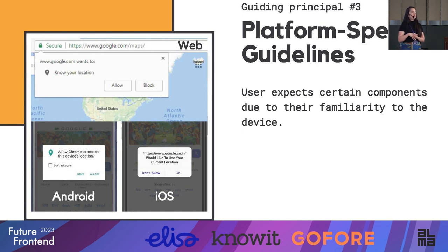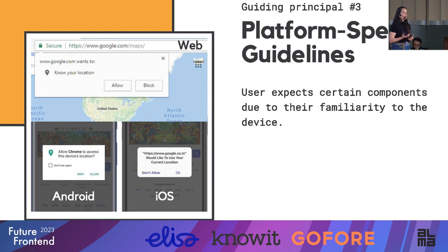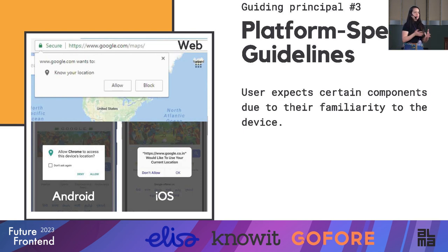Guiding principle number three: platform-specific guidelines. The user expects certain components due to their familiarity with the device. Take the example of an alert — if you need a location alert on web, you get that little box you can style to your brand. But you might not want to push that to your devices. Stick to what the device shows natively, because that means the user doesn't have to think too much about what they're seeing. It's a little bit tricky from a design perspective, because one of the main guiding principles is to keep your brand consistent throughout the product.